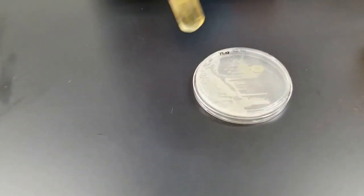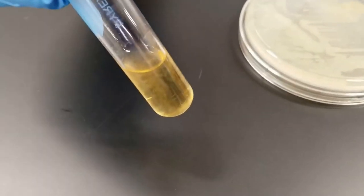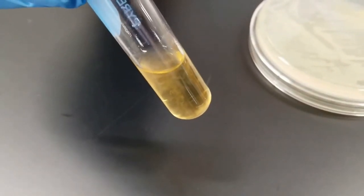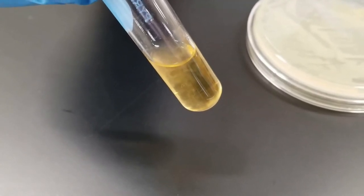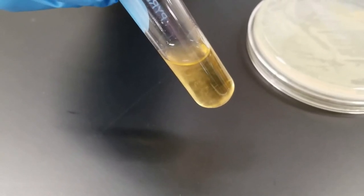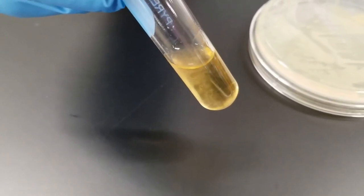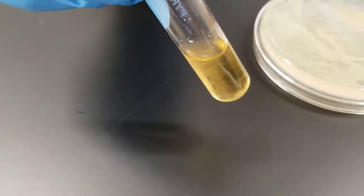Now the other tube that we inoculated was the thioglycollate. This will give us an indication as to the oxygen requirements on here. We just did a stab down and just down and up. You'll notice that there's growth along the stab line. But most of the growth is at the top portion of the tube. That is telling you some information about the oxygen requirements.